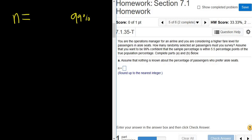Then it says that the sample percentage is within 5.5 percentage points. That's a confusing way to give us what's called the margin of error. It says percentage points, so we have to turn it into a decimal.